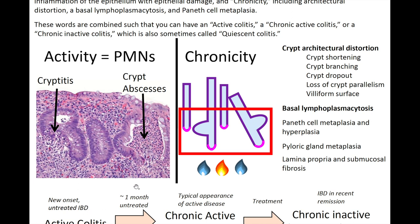Approximately one month of untreated active colitis transforms into chronic active colitis. To reach 'chronic,' we need signs of chronicity, which in the colon include crypt or architectural distortion — no longer those perfect test tubes in a rack. That can involve crypt shortening, crypt branching, crypt dropout, loss of crypt parallelism, villiform surface, and basal lymphoplasmacytosis where crypts lift up off the muscularis mucosa. Also plasma cells in the lamina propria, Paneth cell metaplasia, and pyloric gland metaplasia are all features of chronicity.